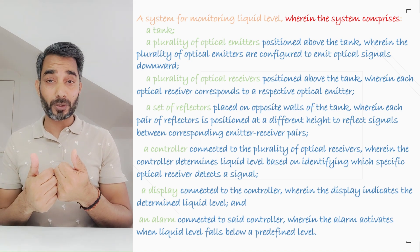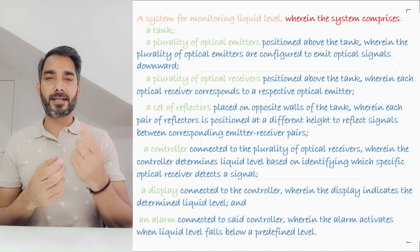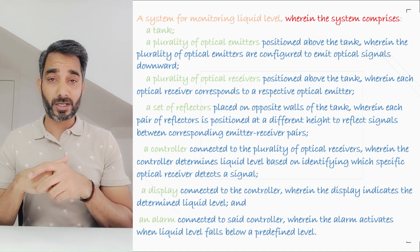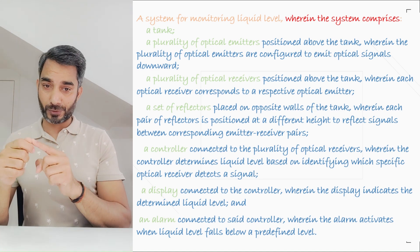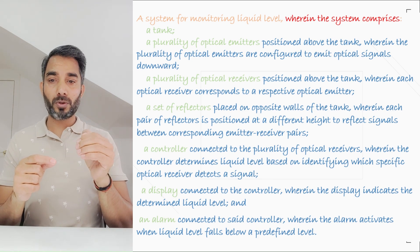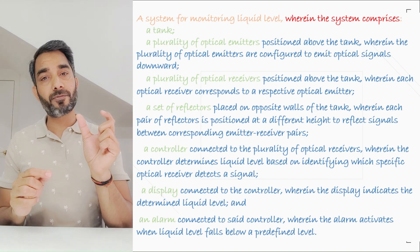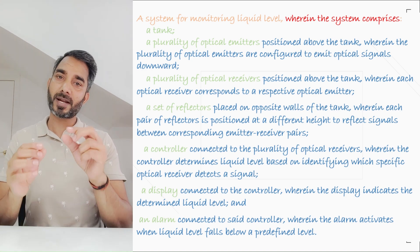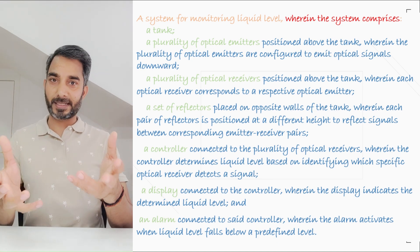Then we have a display unit connected to the controller as shown in the diagram, which displays the level indication. And finally, the important aspect about the alarm functionality: an alarm connected to the controller, wherein the alarm activates when the liquid level falls below a predefined level. We are not writing L3 here; we write 'a predefined level' because L3 is just one example. That predefined level could be L2 or L4. So this is how your apparatus claim would look like.